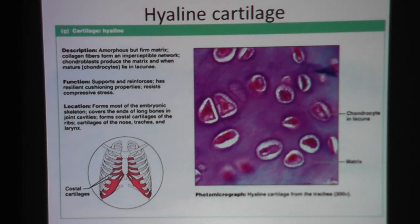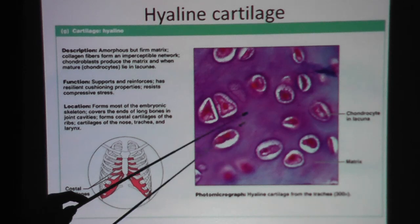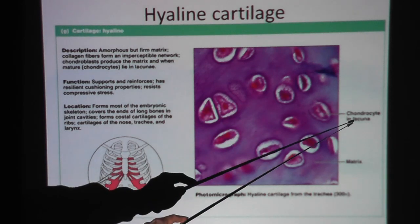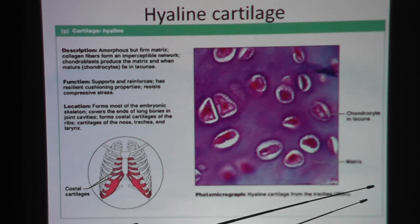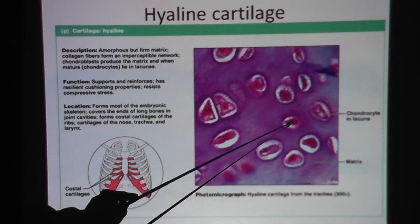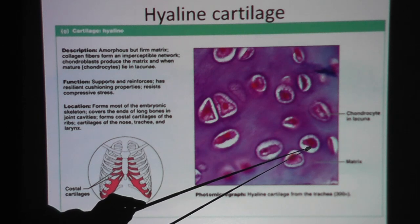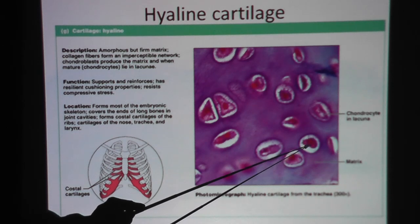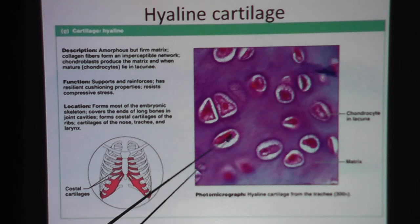Here's a picture of hyaline cartilage. Common to all cartilages, we have chondrocytes in lacuna. Chondrocytes — chondro means cartilage and cyte means cell. Lacuna is the space that these chondrocytes live in. So that little white space where you find the chondrocyte is the lacuna. That's pretty obvious in all cartilages.